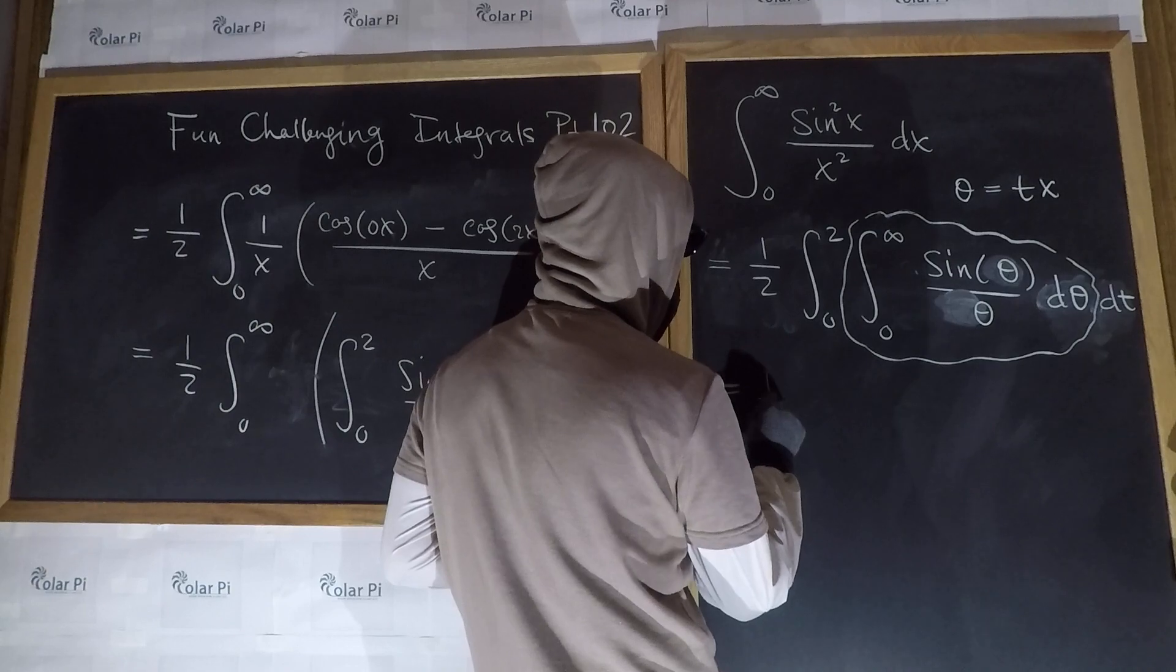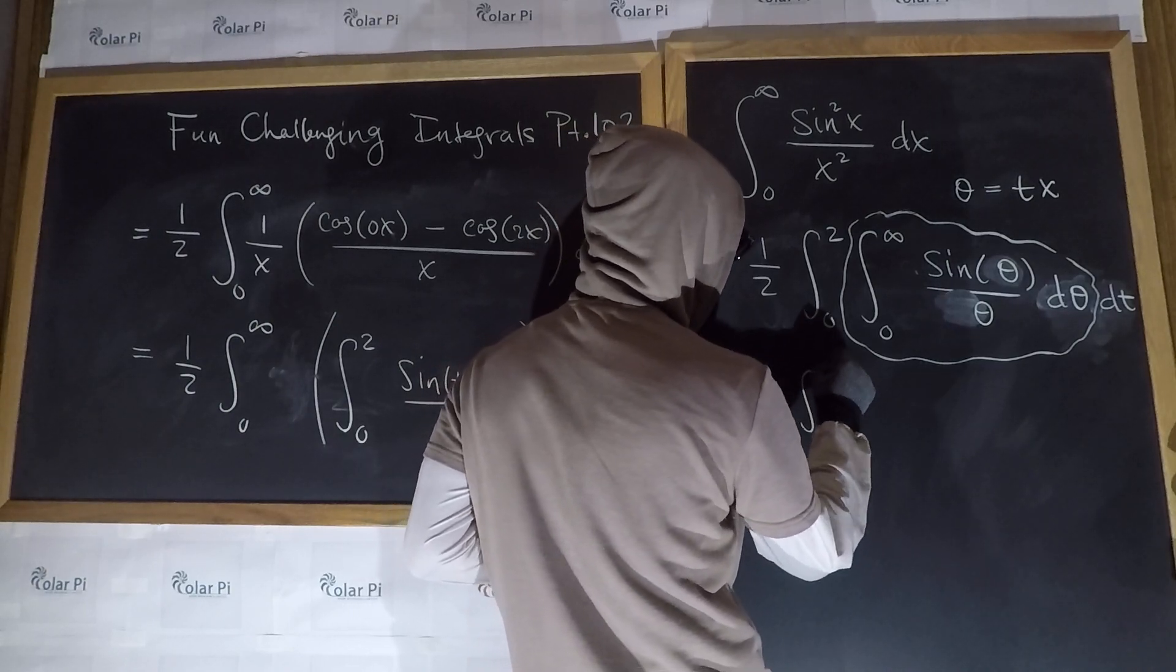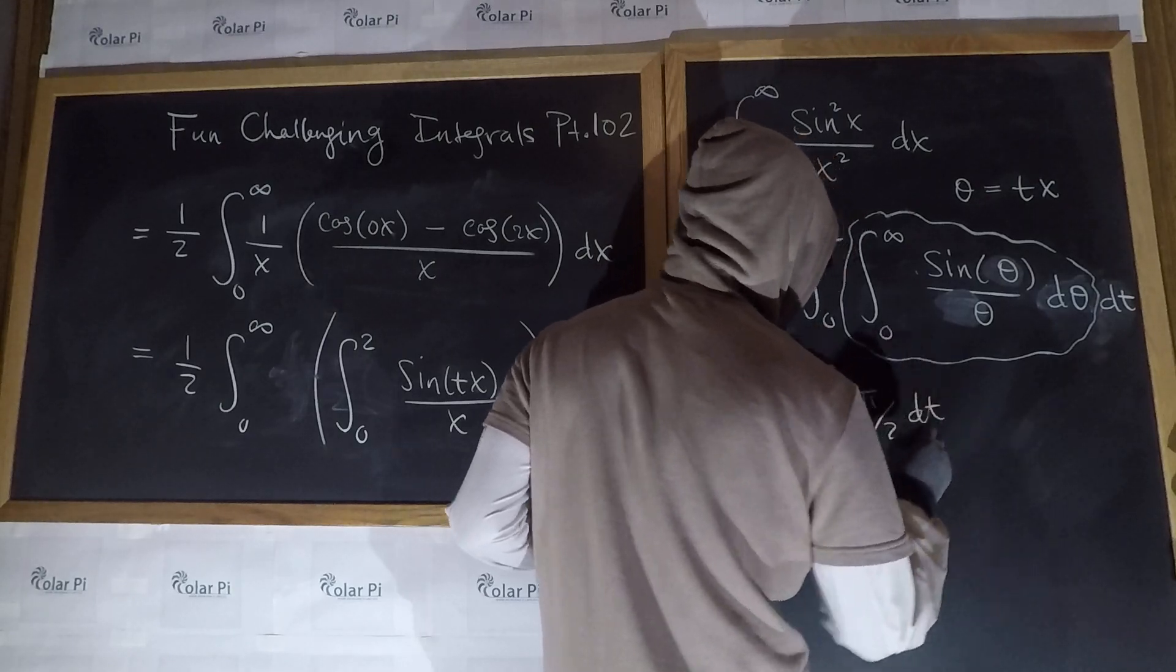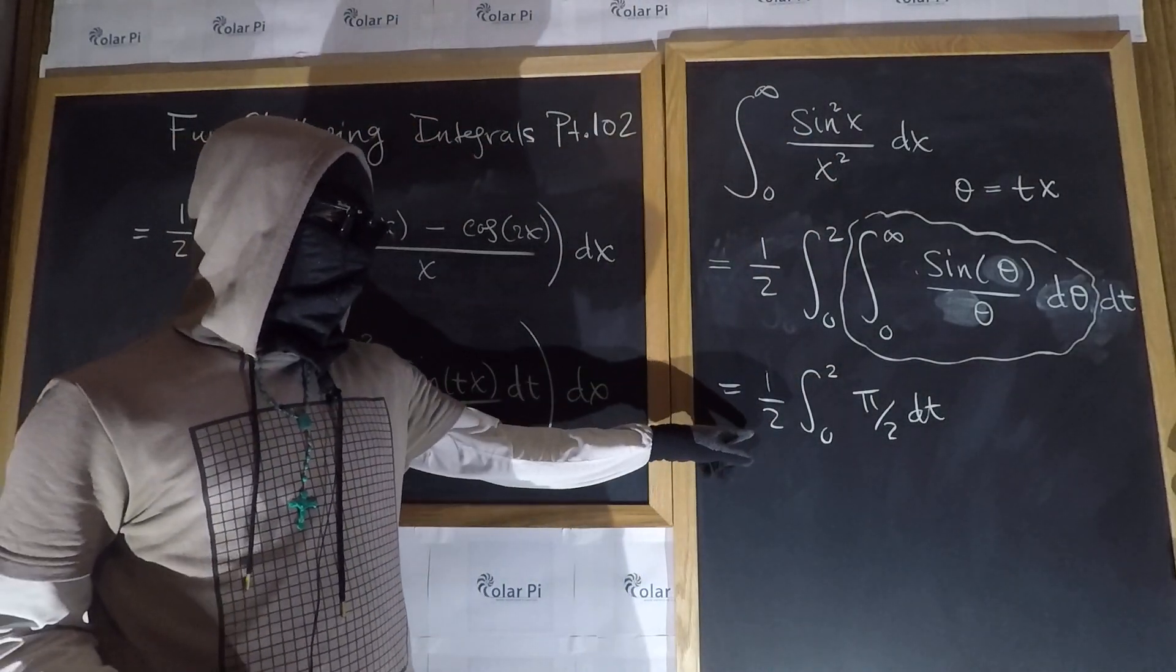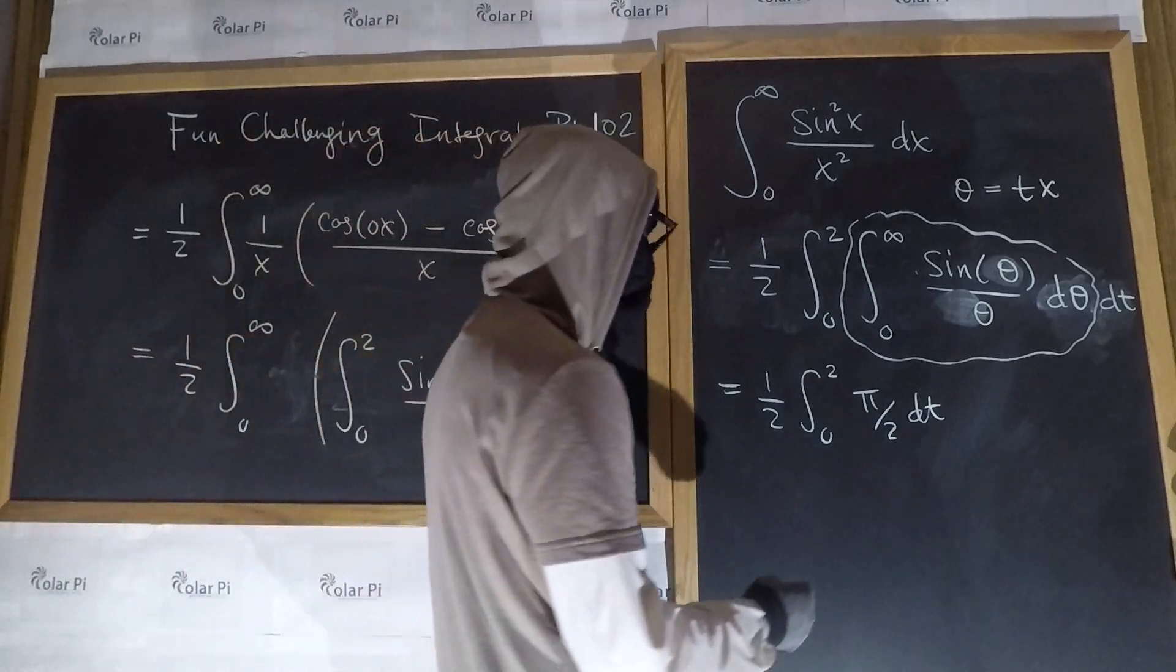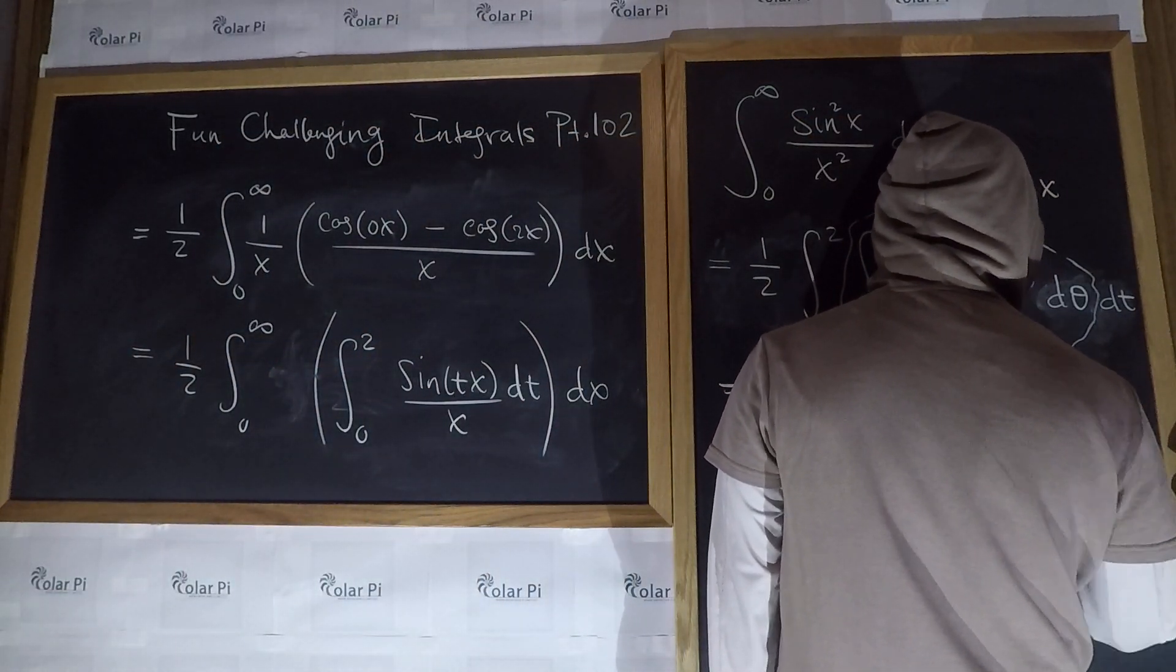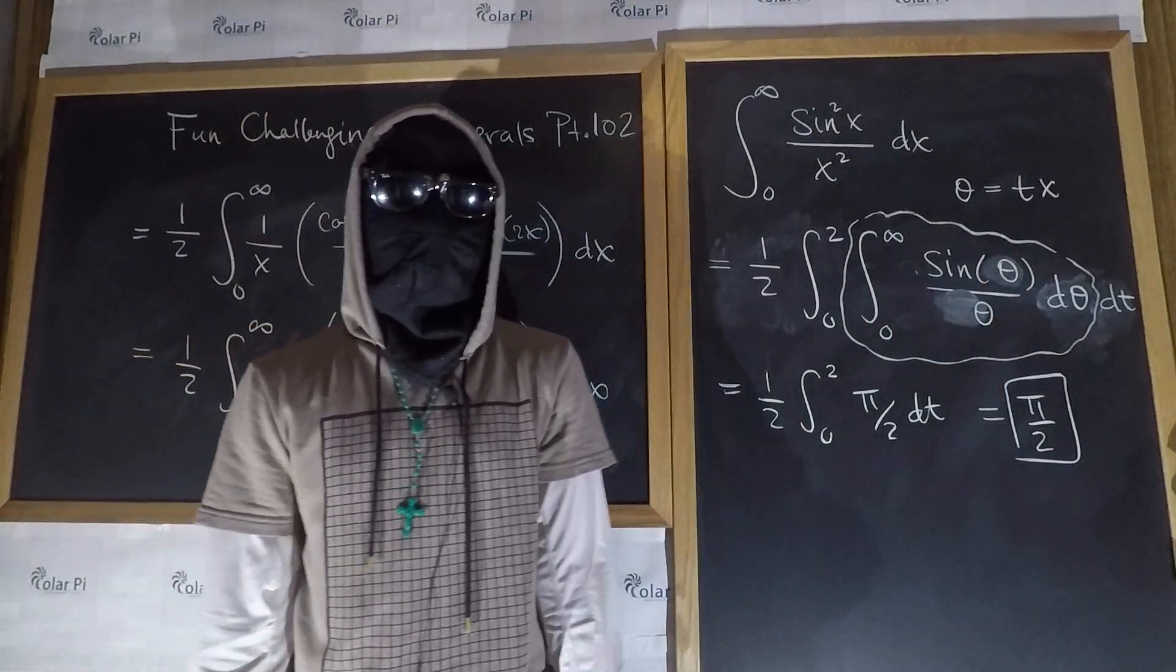what I'm saying is that this fellow here is equal to pi over two. So, we have a half integral from zero to two of pi over two dt. But wait,